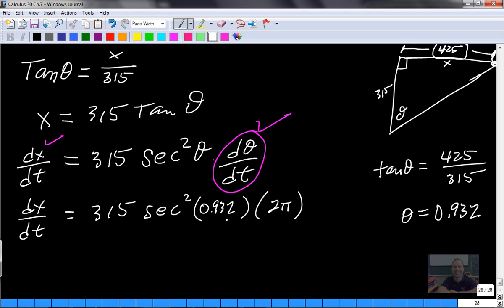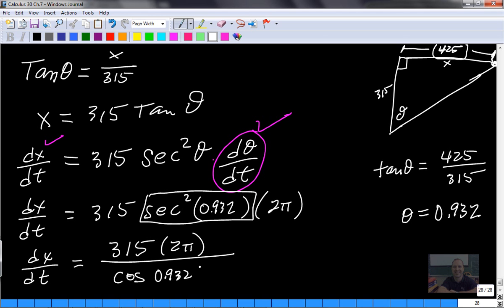then we would put this into our equation. Let's see what we get when we plug everything in, and see if we can find our rate of change of this side with respect to time. So just as a reminder here, there's no button on your calculator for secant. So we really should write this as 315 times 2 pi divided by cos of 0.932 all squared,